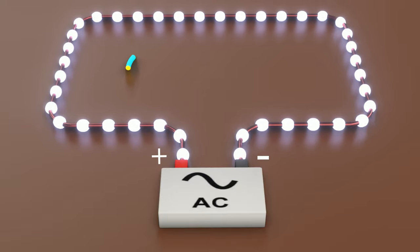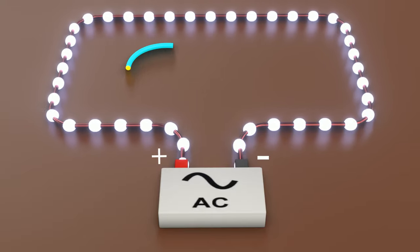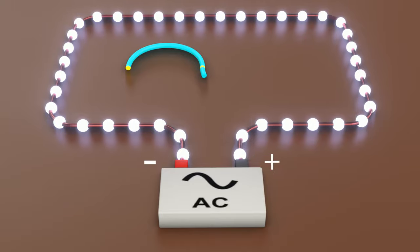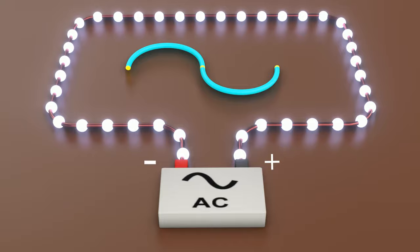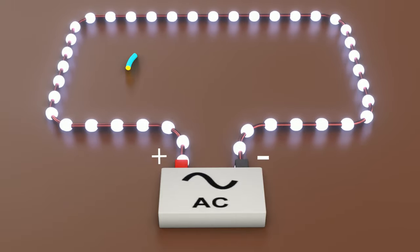The direction of the current changes due to the changing polarity of the AC voltage. And now the question is, why polarity changes? And the answer is the method we generate the AC current.